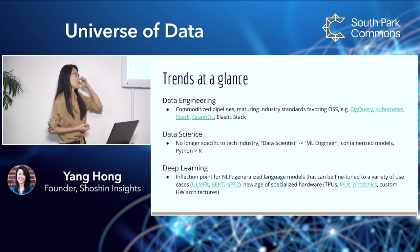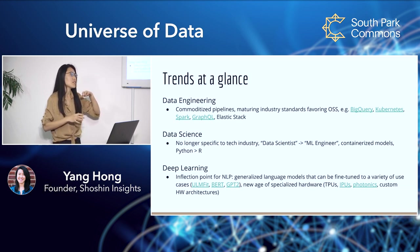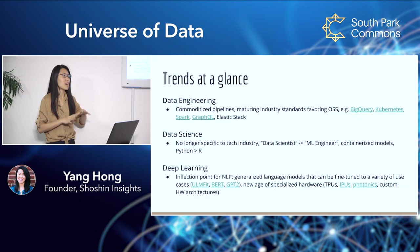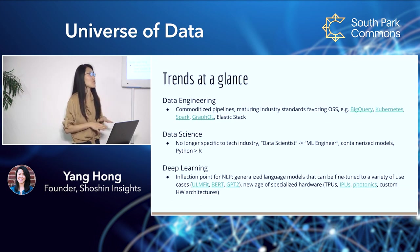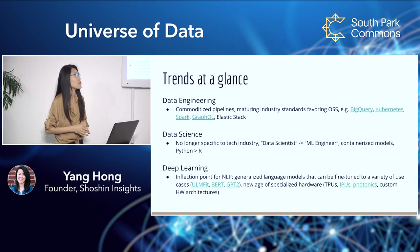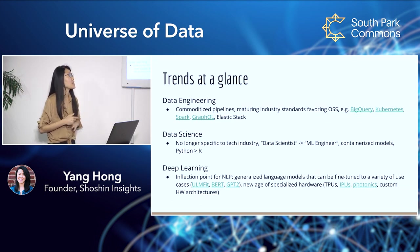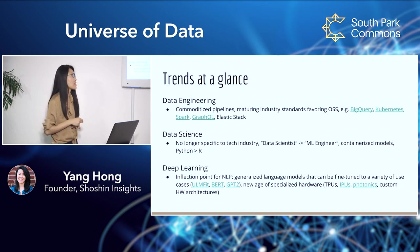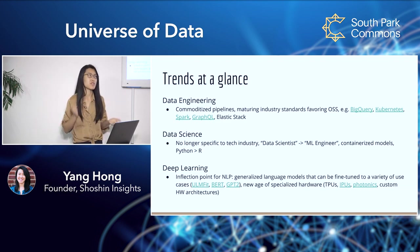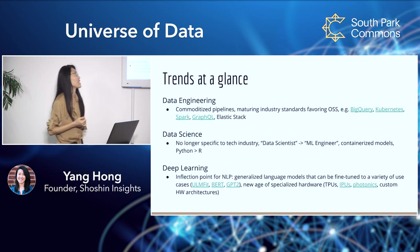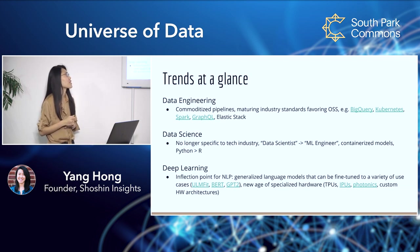Some golden-child examples I'll call out right now include BigQuery, Kubernetes, Spark, GraphQL, and the Elastic Stack — previously known as the ELK Stack.